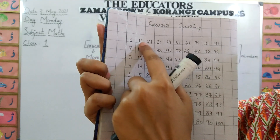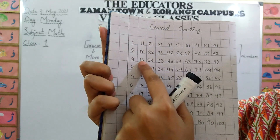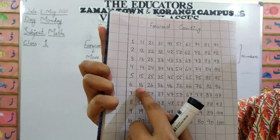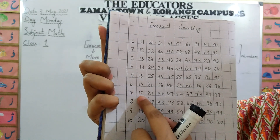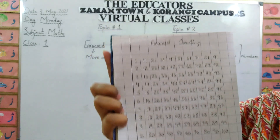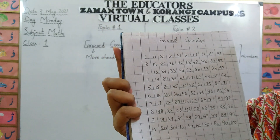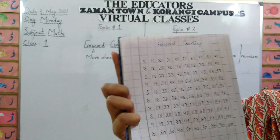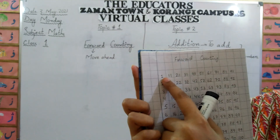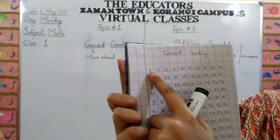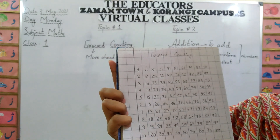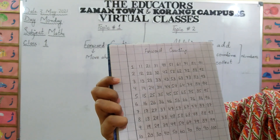Then: eleven, twelve, thirteen, fourteen, fifteen, sixteen, seventeen, eighteen, nineteen, twenty. These all are forward counting and the forward counting starts from one. You all know about forward counting. It's very simple.